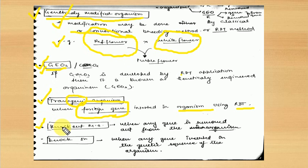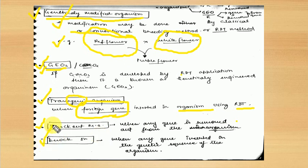The next terminology is knock-out organism. Knock-out means removing a particular gene from any organism. For example, if an organism has a particular gene — like a lac-producing gene — such as beta-galactosidase (lac Z, lac Y, lac A) — and we remove that gene, then such an organism is called a knock-out organism. Knock-in is just the opposite: if any foreign gene is inserted into an organism, that organism is called a knock-in organism and the process is called knock-in.